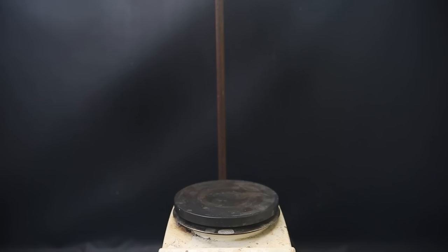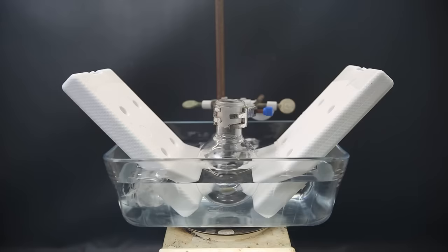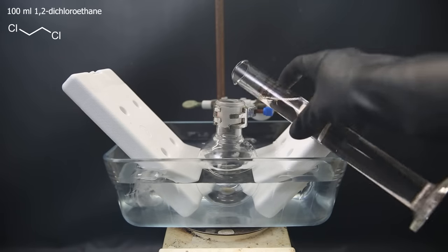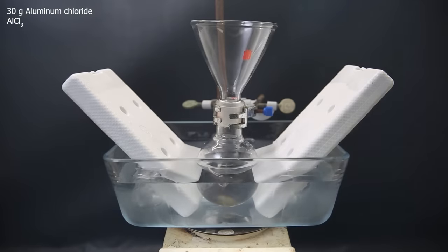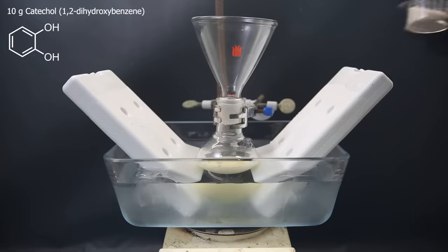So to get started with the synthesis, I set up a stir plate and a flask in a water bath. I add some cooling packs and ice to prevent the reaction from going out of control. I then add 100 ml of 1,2-dichloroethane as a solvent and 30 grams of aluminum chloride as the catalyst.